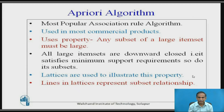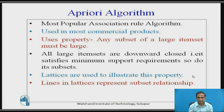The apriori algorithm is the most popular basic association rule algorithm. Many researchers have used this algorithm to do their research, modify it, and generate the best rules from the data set to represent and summarize it. Apriori is used in most commercial products.